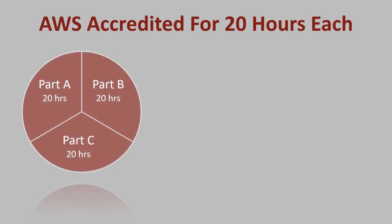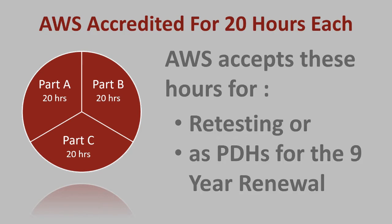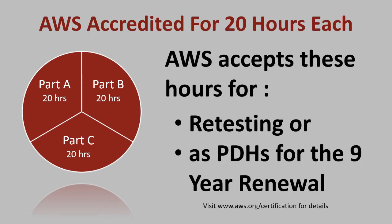Our CWI Part A, B, and C courses are AWS accredited for 20 hours each, and you can accumulate a total of 60 hours if you take all three parts. AWS accepts these hours for either retesting purposes or as professional development hours towards a nine-year renewal. Please visit aws.org/certification for further details.